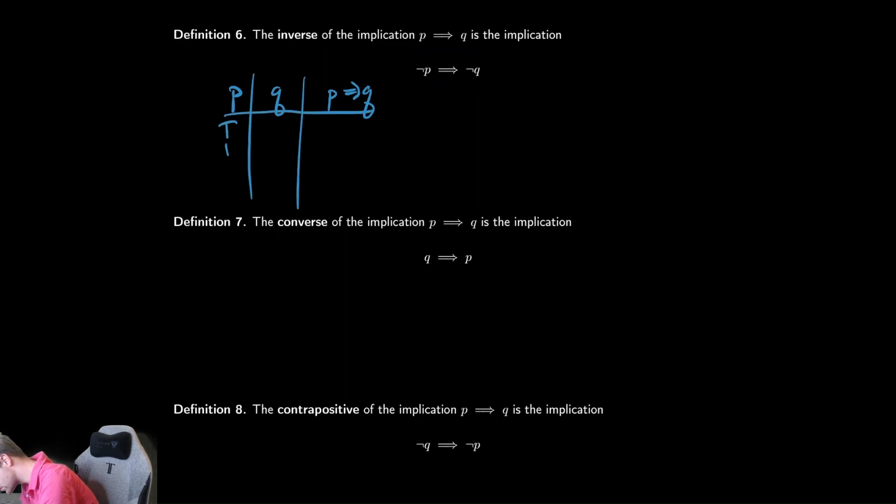Let's do that rather quickly here. We have true, true, false, false, true, false, true, false, and if you remember that this is false only when you have true implies false, and then everywhere else it is true.